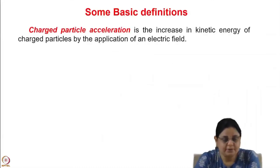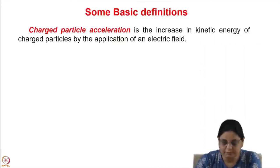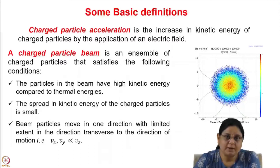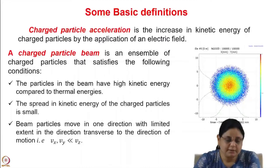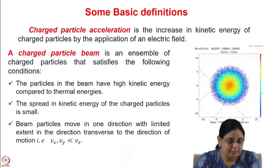Let us start with some basic definitions. Charged particle acceleration basically means increasing the kinetic energy of charged particles by the application of an electric field. We accelerate charged particle beams in the accelerator. A charged particle beam is an ensemble of charged particles that satisfies the following conditions — not all collections of charged particles can be called a beam; only those that satisfy the following conditions are known as a beam.